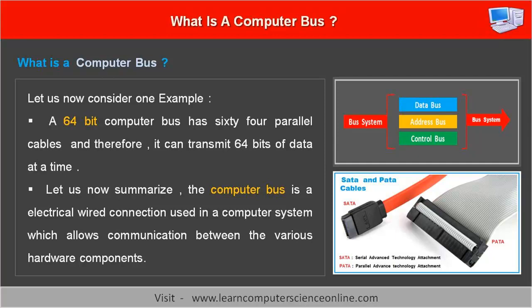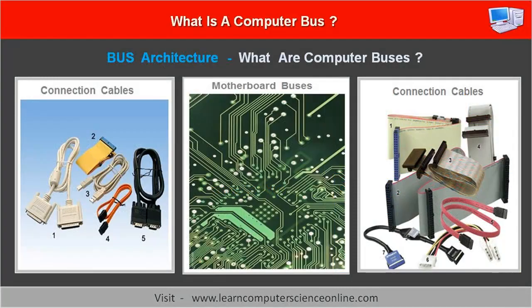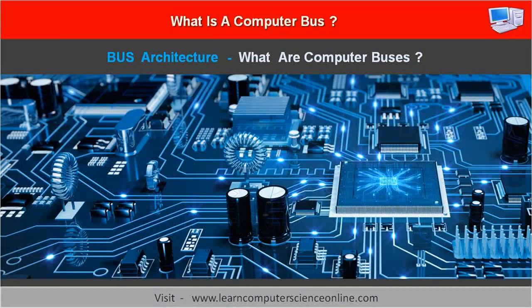To summarize, the computer bus is an electrical wire connection used in a computer system which allows communication between the various hardware components. The computer system makes use of different sizes of buses. The computer bus used in the computer system can be in the form of electrical wires or different types of cables used in different sizes, and the bus is also present on the motherboard. The computer motherboard has an intricate network of different buses present on the rear side of the motherboard printed circuit board.